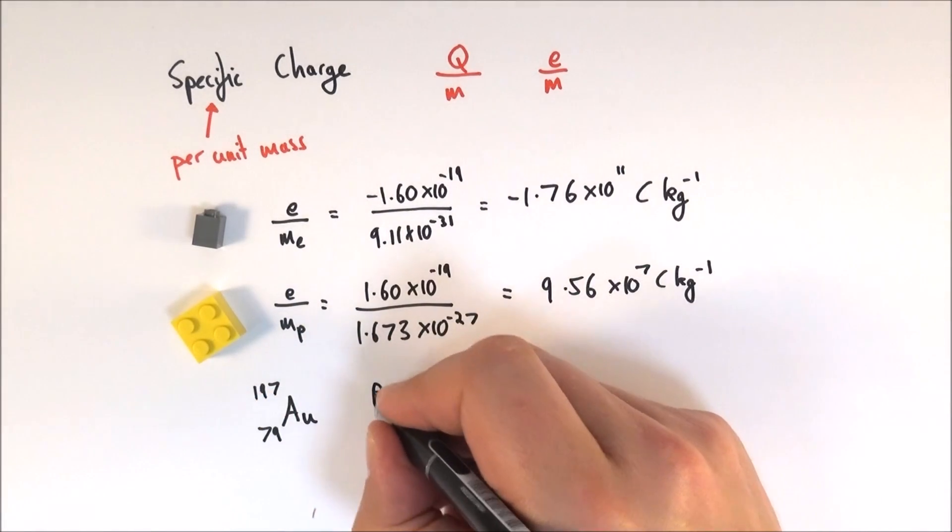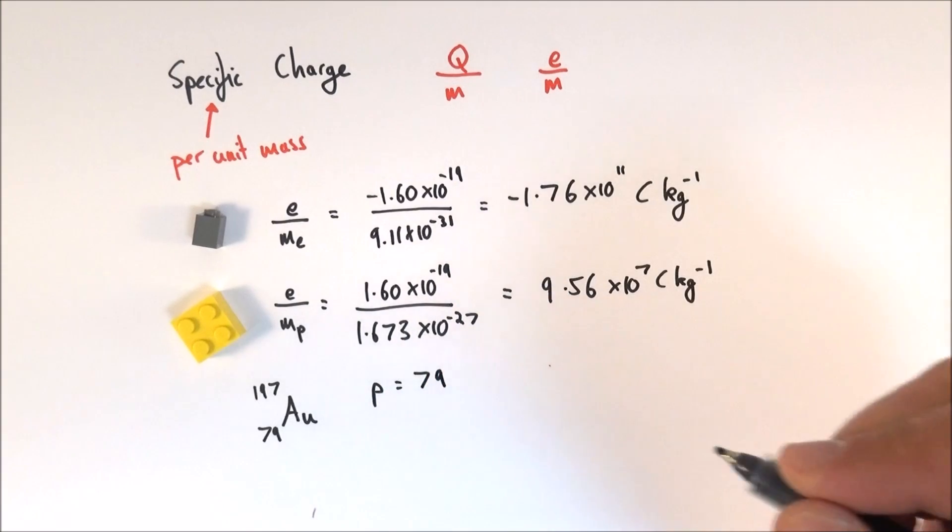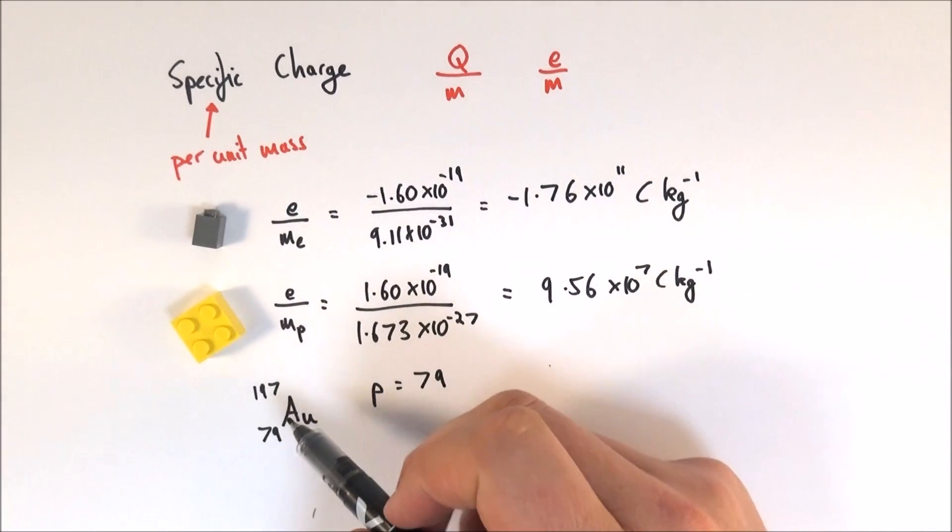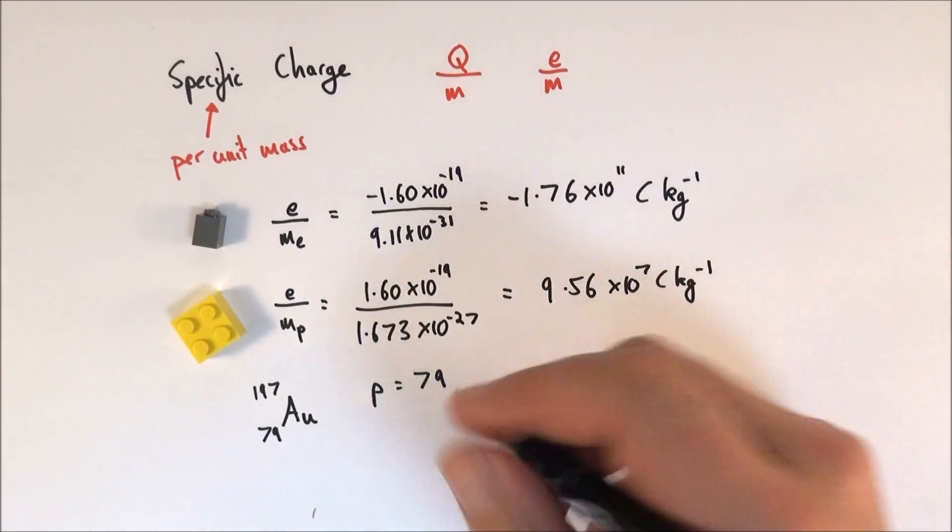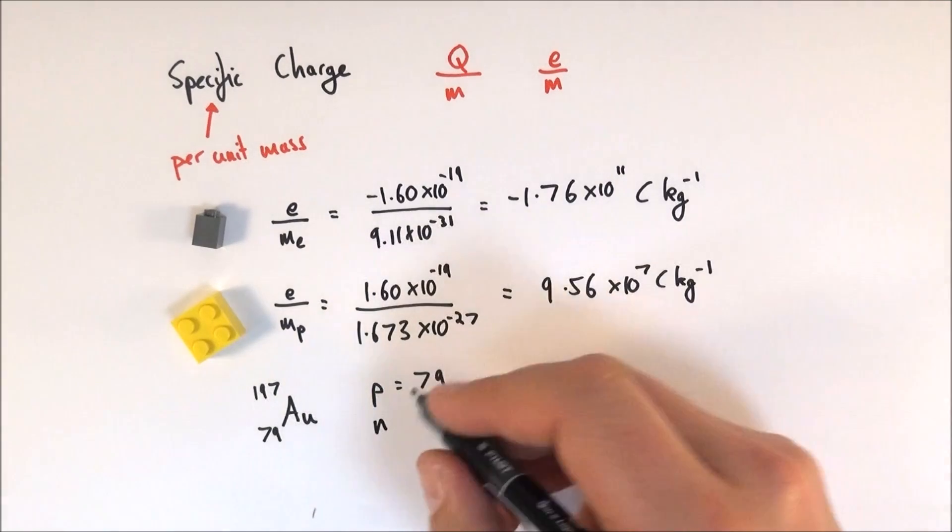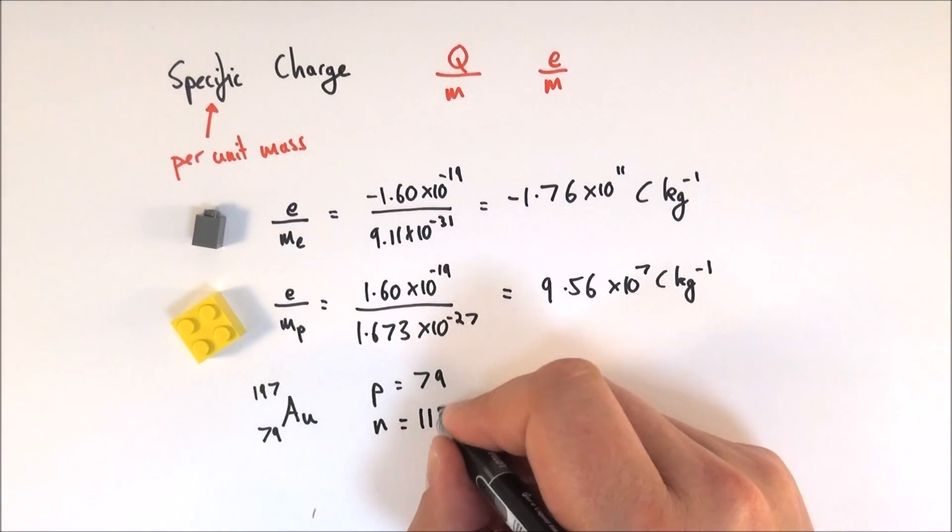What this means is that there are 79 protons in the middle, plus there are also another total number of neutrons which give a total of 197 nucleons in the middle. So 197 minus 79 is equal to 118.